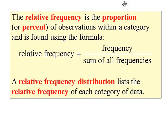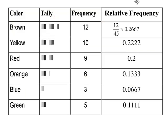Let's look at an example. If we take our frequency table for colors of M&Ms, we can extend the table to include a relative frequency by first summing all the frequencies of all the colors, which turns out to be 45, and then dividing each frequency by that sum of frequencies, 45.